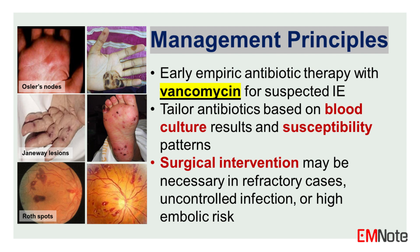Early empiric antibiotic therapy is crucial, with vancomycin being the most appropriate choice for suspected IE due to its broad coverage of gram-positive organisms, including methicillin-resistant Staphylococcus aureus (MRSA). Subsequent antibiotic regimens should be tailored based on blood culture results and susceptibility patterns. Surgical intervention may be necessary in cases of refractory heart failure, uncontrolled infection, or high risk of embolization, with indications including valve dysfunction, paravalvular extension, or persistent bacteremia despite appropriate antimicrobial therapy.